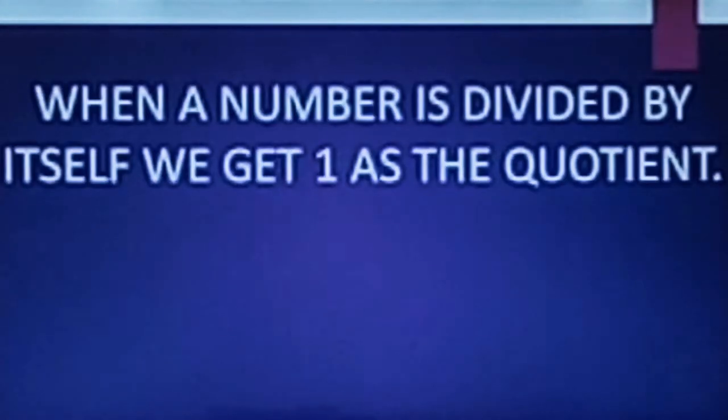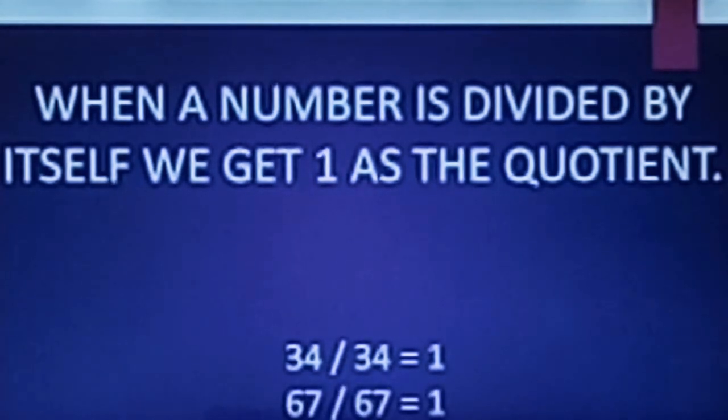When a number is divided by itself we get 1 as the quotient. Let me take some examples so that you can understand this. 34 divided by 34 is 1. 67 divided by 67 is 1. Now let's look at the next property of division.